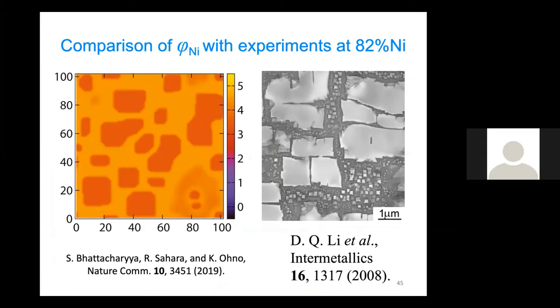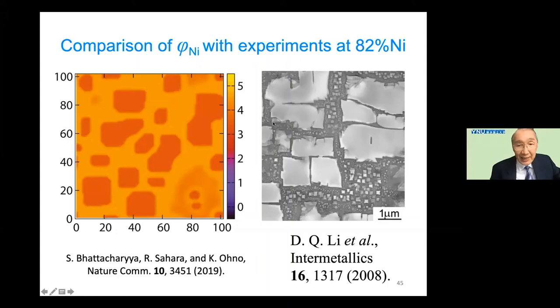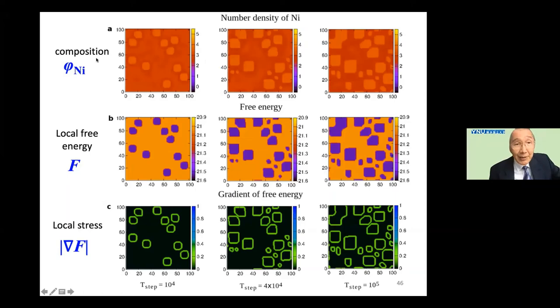In this method, not only the composition but also the local free energy distribution can be simultaneously obtained. Taking the derivative of the local free energy, we can obtain the local stress distribution. From this figure, we can identify that local stress is concentrated at the periphery of each precipitate.